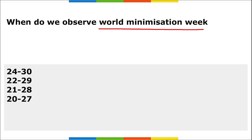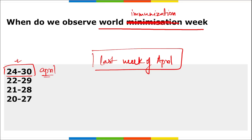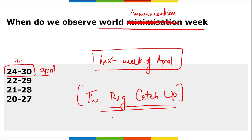World Immunization Week is observed from 24th to 30th April every year — specifically the last full week of April. It promotes the use of vaccines to protect people of all ages against disease. The theme for 2023 is 'The Big Catch-Up,' and World Immunization Week has been observed by WHO since 2012.